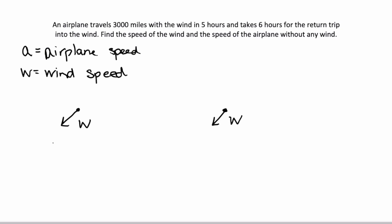So the airplane can travel against the wind or into the wind, so that means the airplane is going the opposite direction, or the speed of the airplane is slowed down by the wind, so a minus w is the speed.